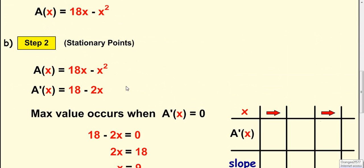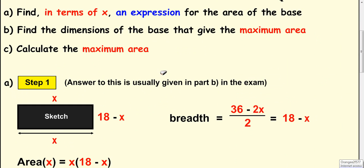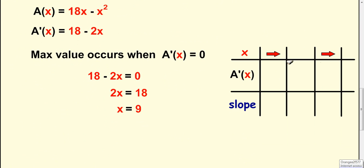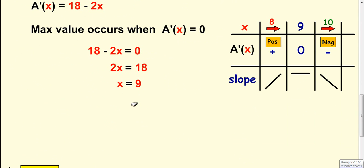Now we have to prove that this is when the maximum area occurs. So we do a nature table. That's 9 in the middle. Look at a bit before 9 to see what's happening with the gradient, and a bit after 9 to see what's happening with the gradient. The gradient at the stationary point is obviously 0. A bit before, substitute 8 in here. So you've got 18 minus 16. That's a plus. Then substitute 10 in here and you've got 18 minus 20, which is negative. So we've just proven you have a maximum turning point at x equals 9.